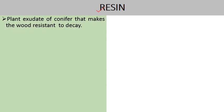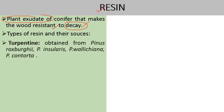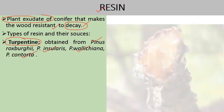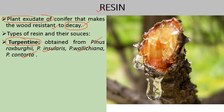One important chemical exudate obtained from coniferous plants is resin. This is a transparent exudate that coniferous plants create — a plant exudate of conifers that makes the wood resistant to decay. There are various types of resins. First is turpentine, which is obtained from various species of Pinus, like Pinus roxburgii, Pinus insularis, Pinus wallichiana, and Pinus contorta. This transparent liquid substance is known as resin.